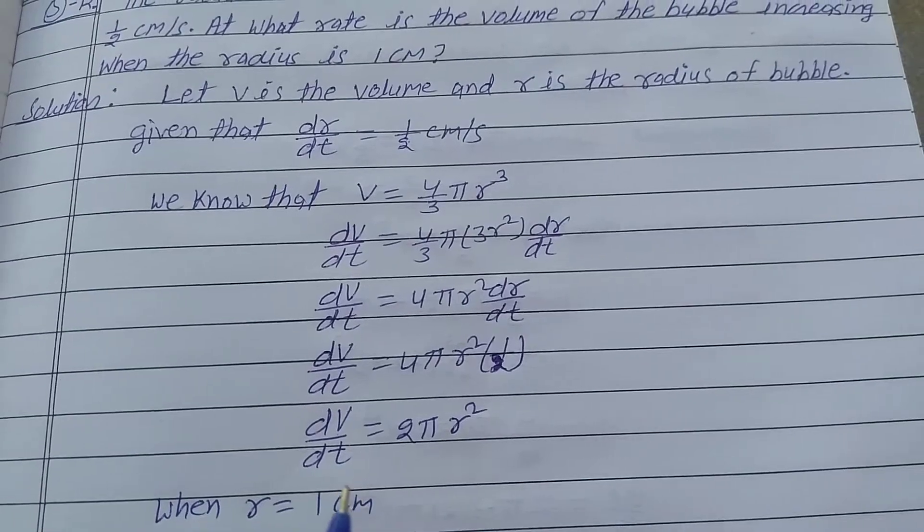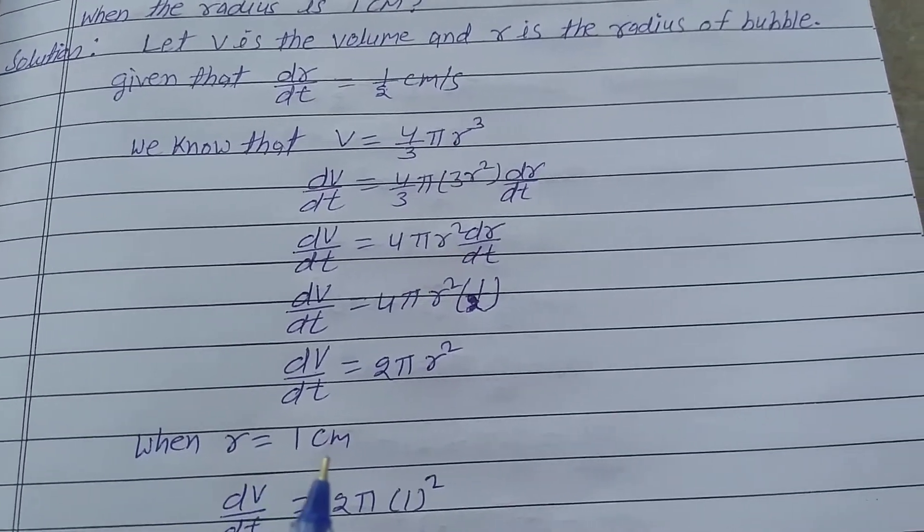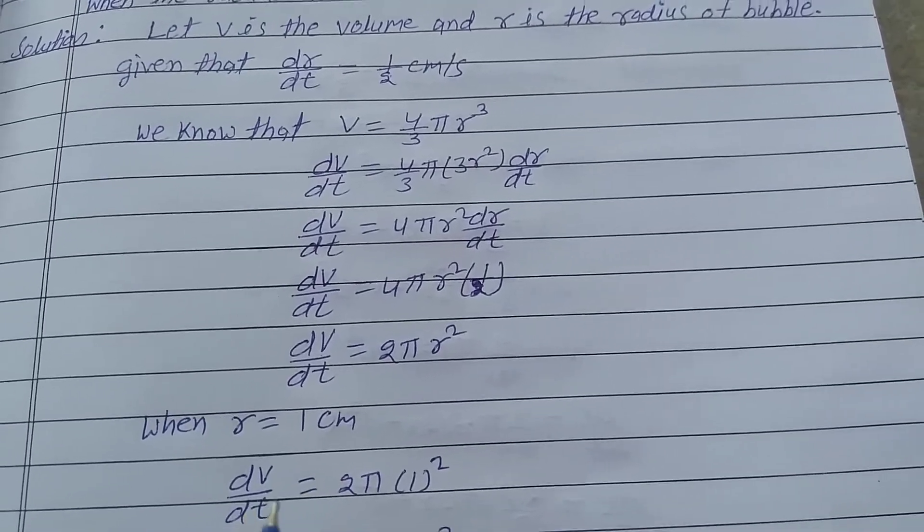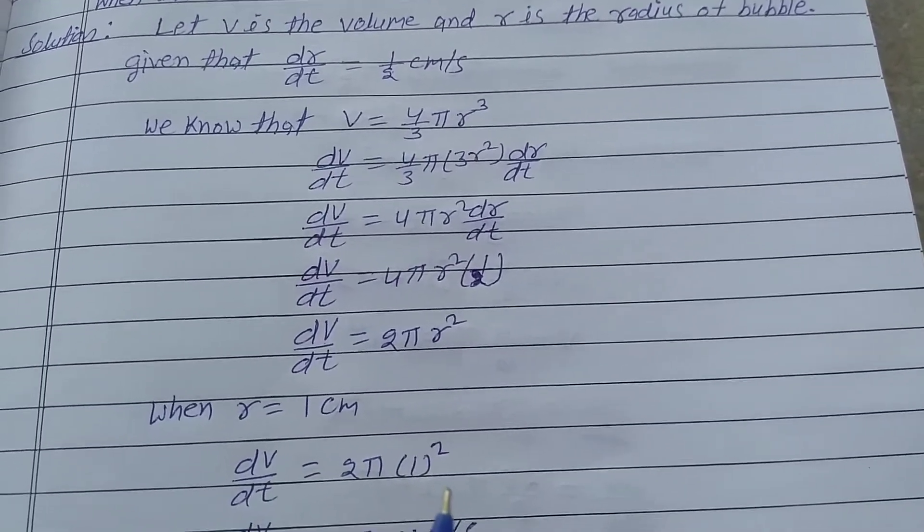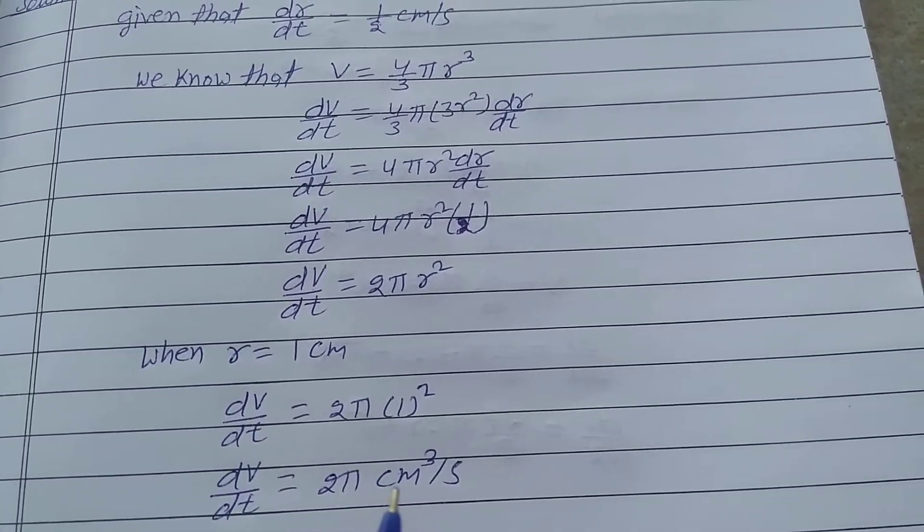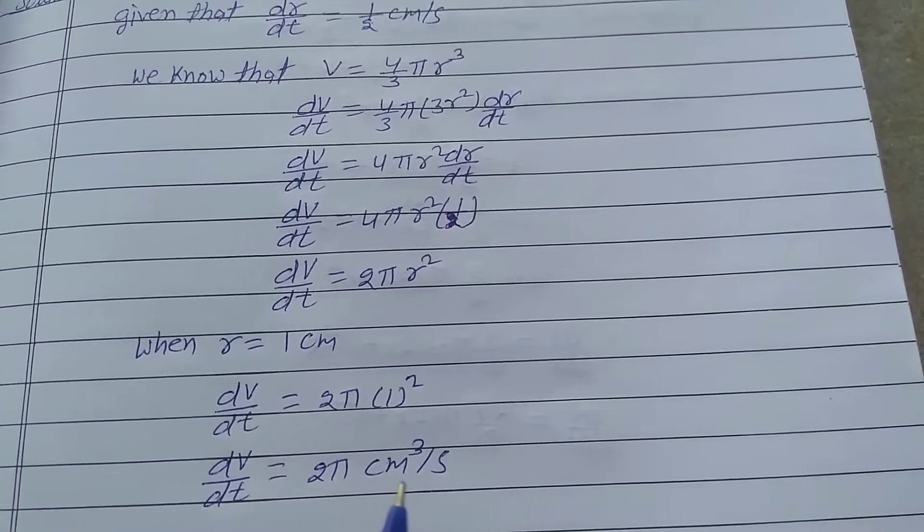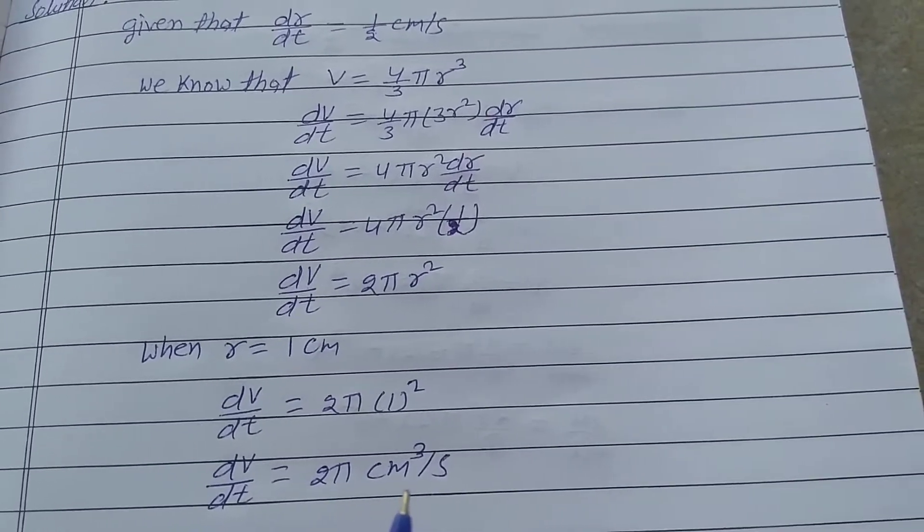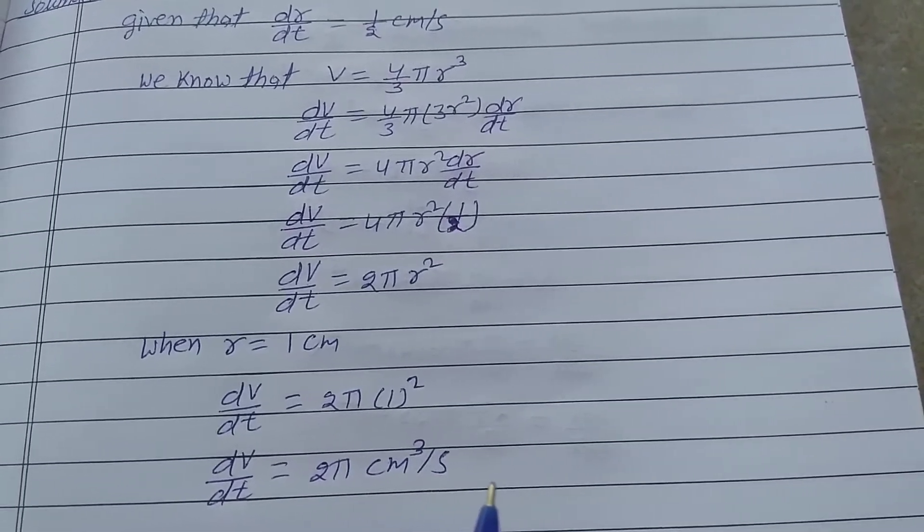Find the increasing rate of volume when r = 1 centimeter. When r = 1 cm, dV/dt = 2π(1)² = 2π cm³/s. Therefore, the increasing rate of volume is 2π cm³/s.